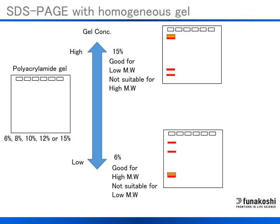Protein samples vary in size from small molecular weight to large molecular weight. Polyacrylamide gels restrain larger proteins while smaller proteins migrate faster in gel. In SDS-PAGE, several single percentage concentrations of polyacrylamide gels may be used depending upon the desired protein sample size. The most common single percentage acrylamide gels often used range from 6% to 15%. Gels with higher acrylamide concentrations are good for separating low molecular weight proteins but not suitable for high molecular weight proteins. Gels with lower concentrations are good for separating high molecular weight proteins but not suitable for low molecular weight proteins.